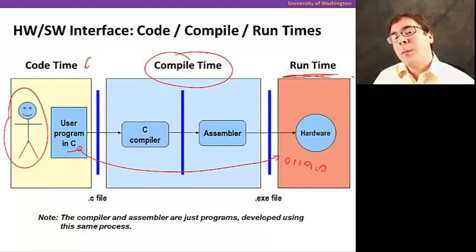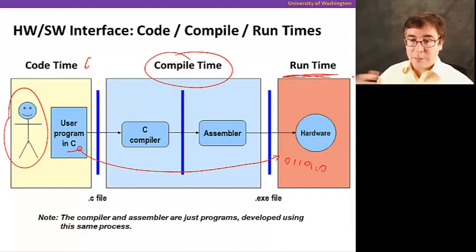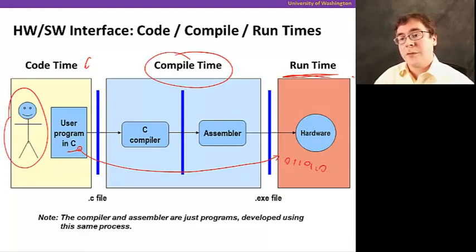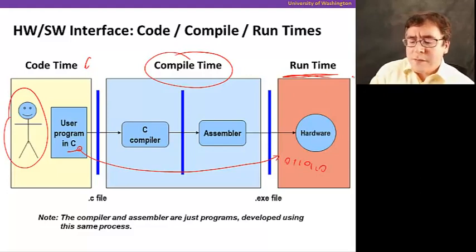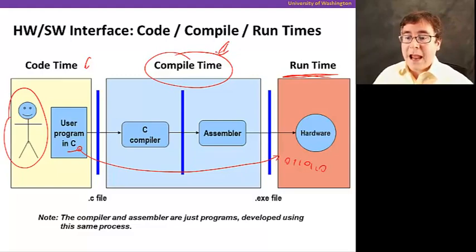Now compile time is something that happens just once, and if you execute your program many, many, many times, that means that it can amortize the cost of compilation a lot. Because if you spend some time compiling the program, you're going to execute so many times, it doesn't matter if you spend a little bit more time doing compilation.